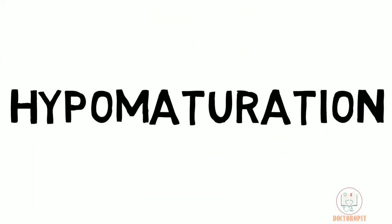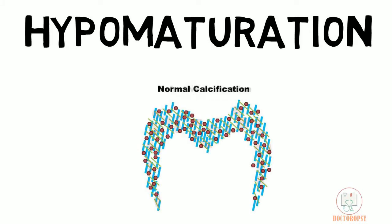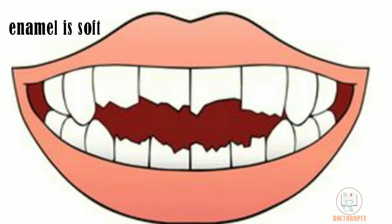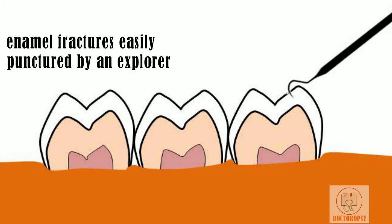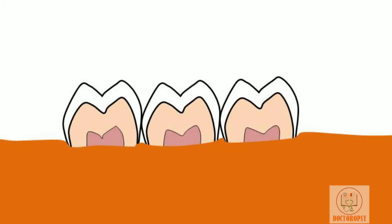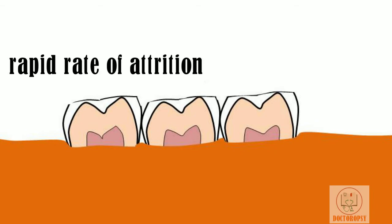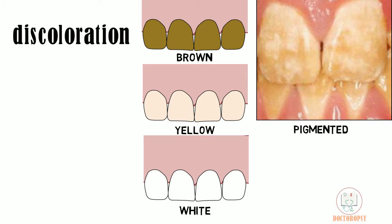In hypomaturation type, the enamel matrix formation is normal and even the calcification is normal — the defect is in the maturation of the enamel. As the enamel matrix is laid down normally, the crown is of normal shape, but like hypoplastic type, the enamel is soft and tends to chip off from the underlying dentine. The enamel fractures easily and may be punctured by a dental explorer. The rate of enamel loss is more rapid than normal teeth but not as rapid as in hypocalcified type. They may show white, yellow, or brown discoloration, which may be uniform, show a pigmented pattern, or a snow-capped pattern.